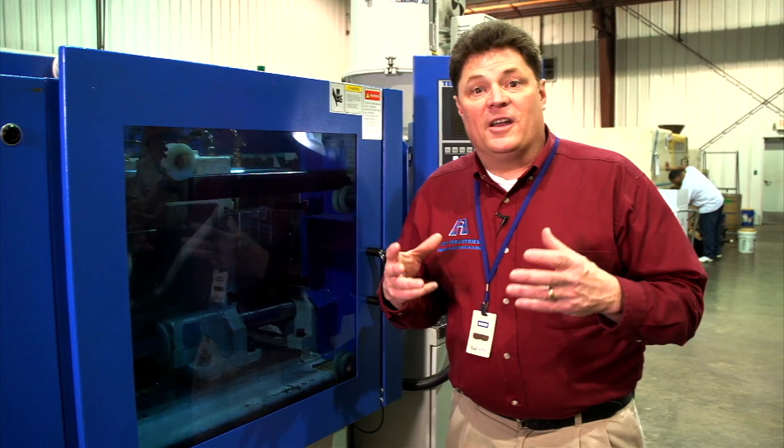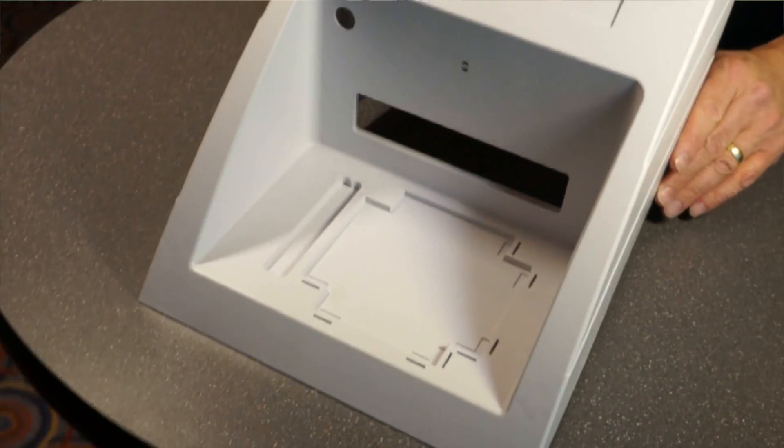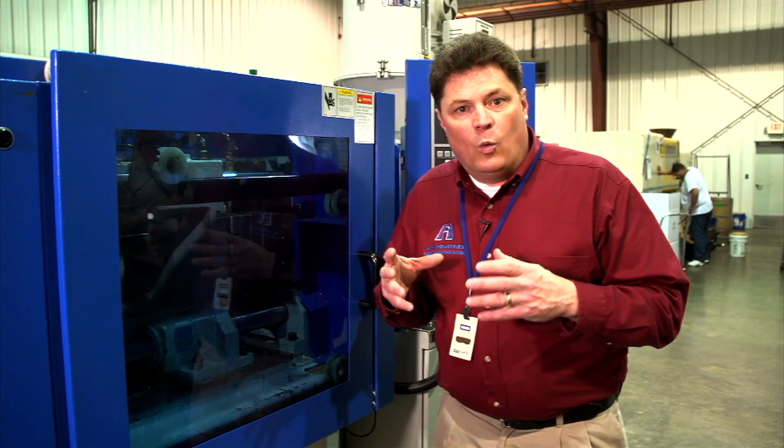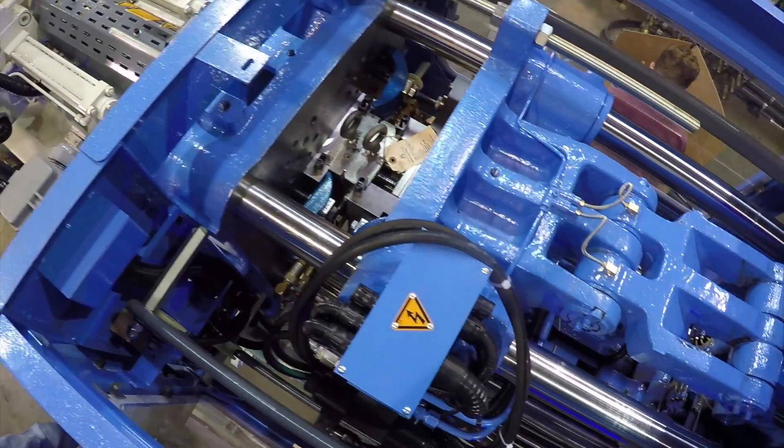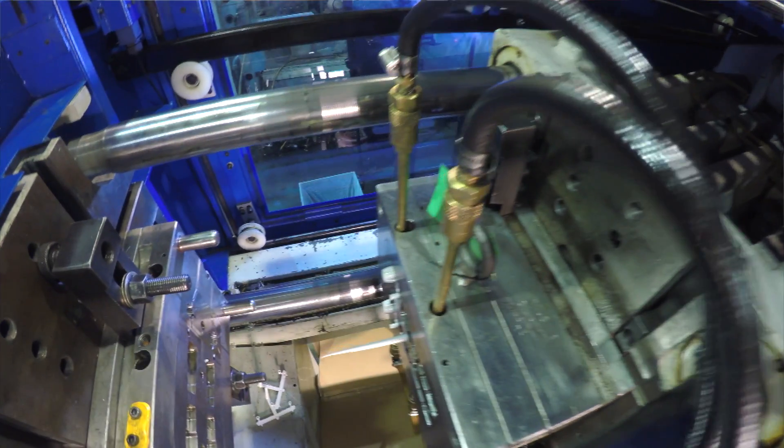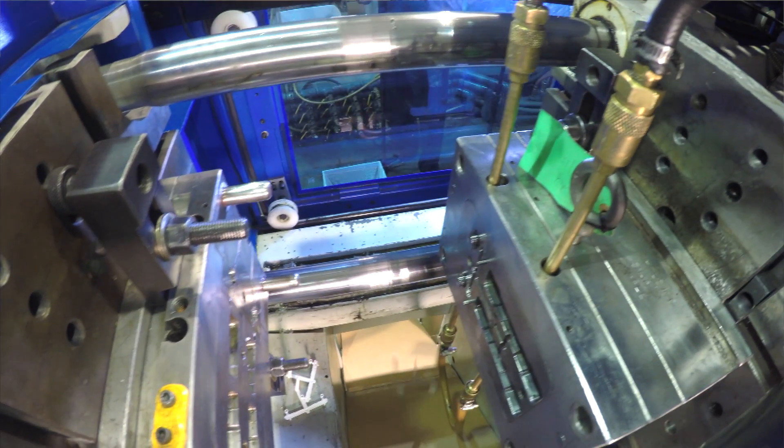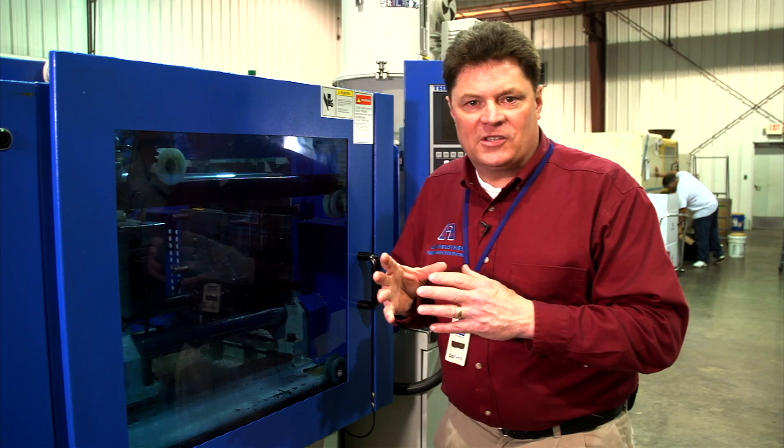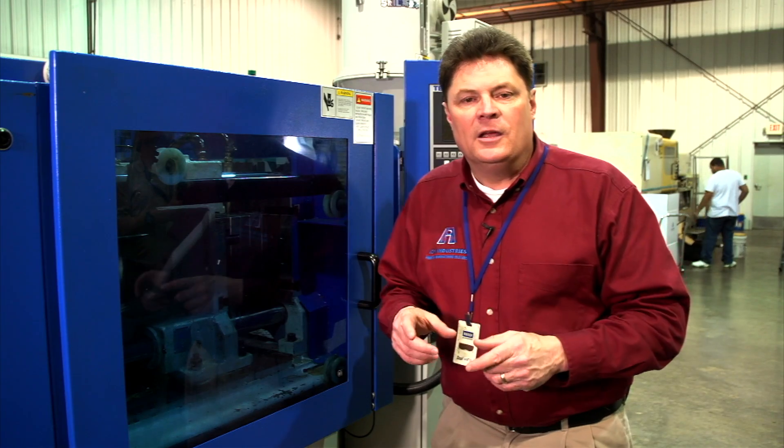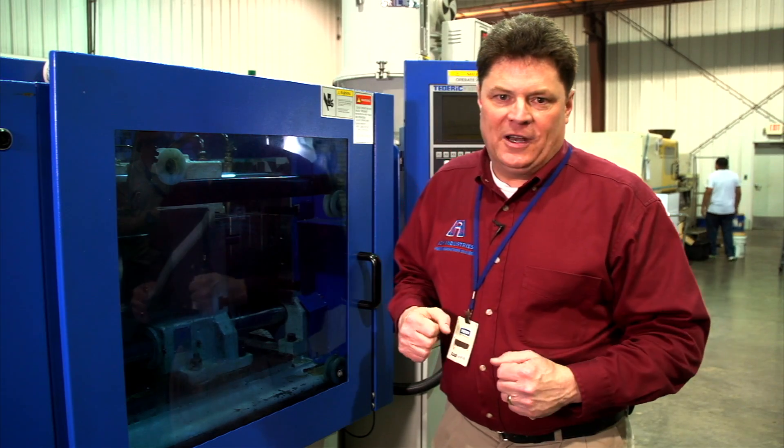There have been any number of cases where a customer brought to us a very thick part with very heavy wall sections and by reducing the wall thicknesses, we were able to not only take out costs but make the part stronger. Those very thick walls trap heat inside the part. And the longer the heat is trapped inside the part, the weaker the part is. So by removing heat quickly and making those walls as thin as possible and still give you the structural integrity you need, we can minimize cost and maximize strength.